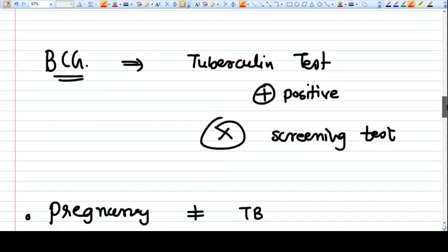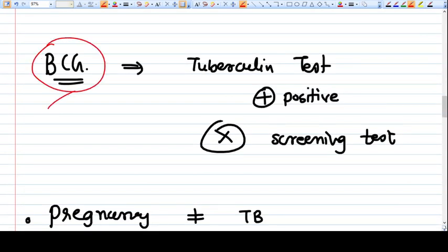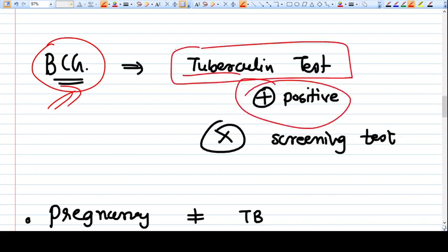This is what TB is in general. The BCG vaccine, which is given in many countries - if the BCG vaccine is given to the baby, then the tuberculin test will become positive. So this test, the tuberculin test, which sometimes has been used as a screening test, is not of use where BCG vaccination is done.